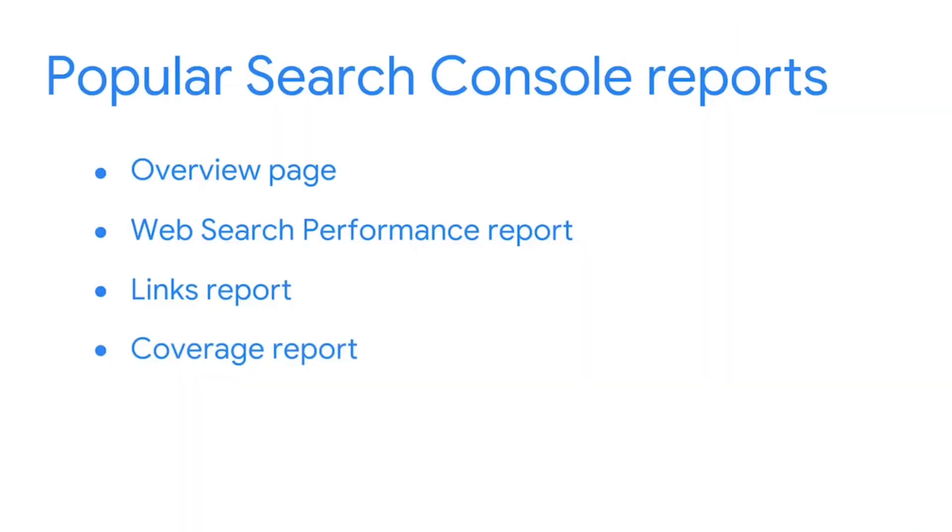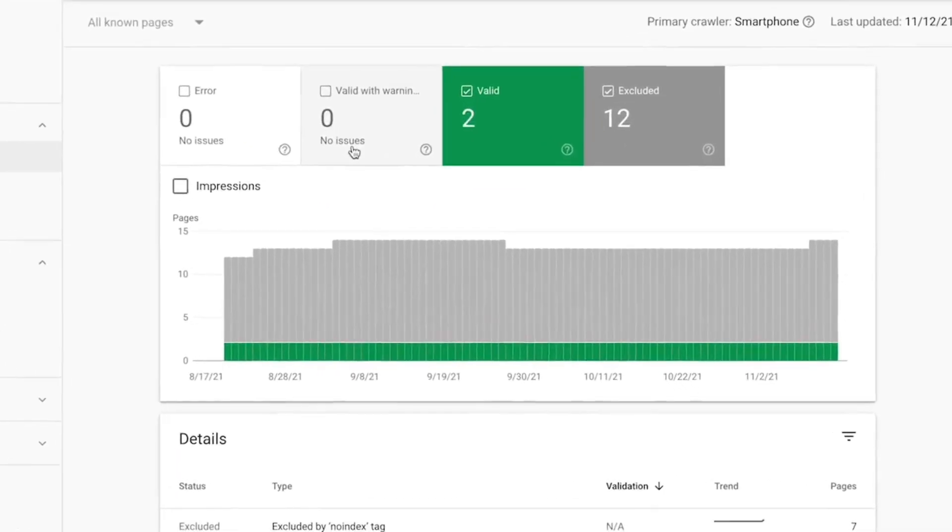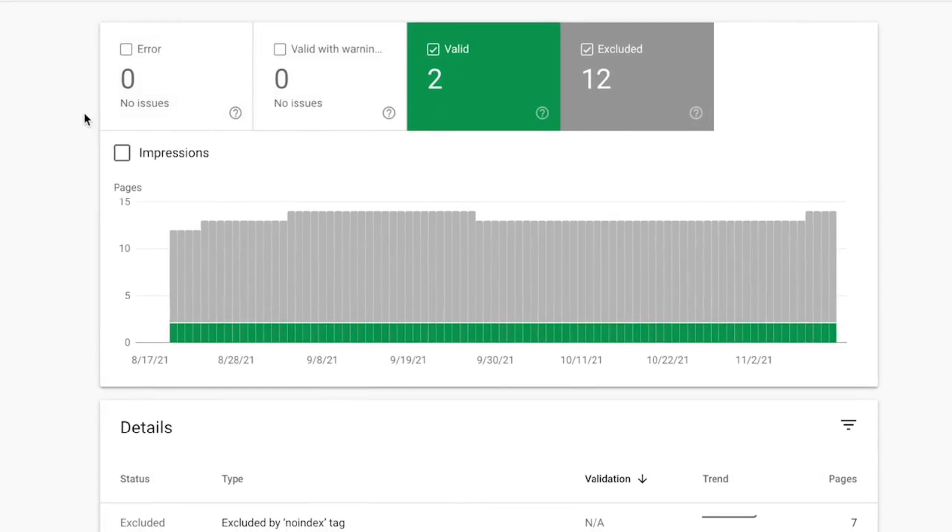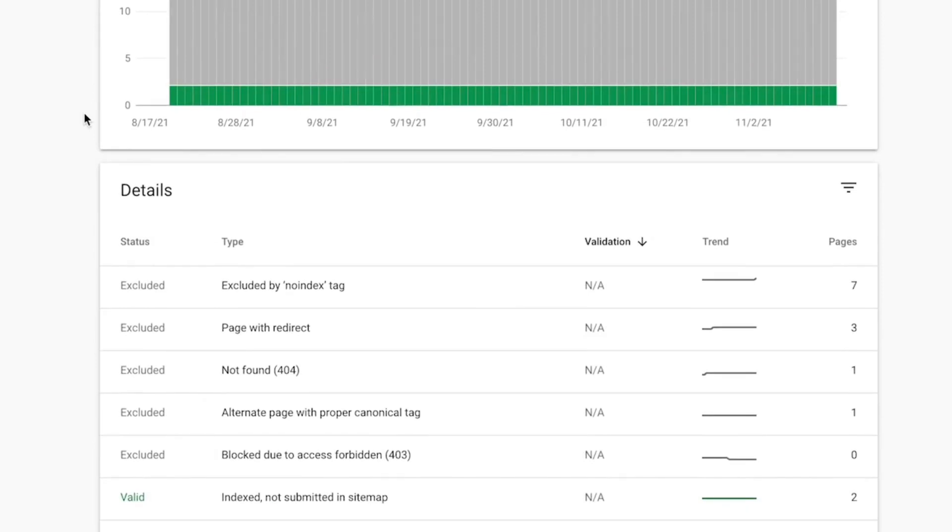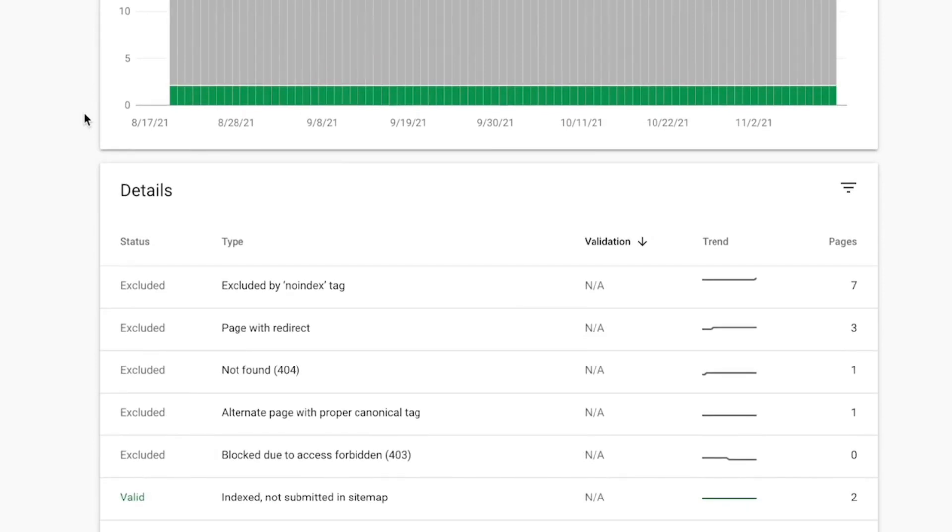The coverage report shows the index status for all pages in your site. Pages are grouped according to whether they are or can be indexed. Also included is a description of why the pages could or could not be indexed.